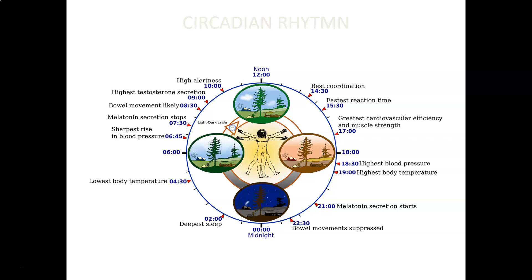Here's a very interesting circadian rhythm that most people follow. Around 4:30 AM, you have the lowest body temperature. Most heart attacks happen around 6:00-6:45 AM due to the sharpest rise in blood pressure. Around 7:30 AM, melatonin secretion stops and you naturally should wake up. Around 9:00 AM, testosterone is highest — good for lifting weights. Your highest alertness is around 10:00 AM, so taking a difficult class between 9 and 11 is very beneficial. In India they start school at 10:00 AM, which makes sense.